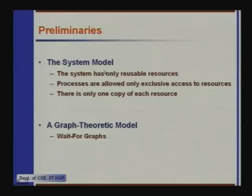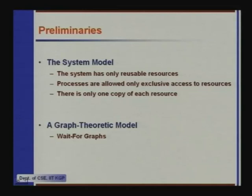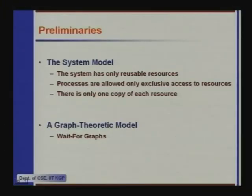Let us look at the system model. The system has only reusable resources — a resource is used by somebody and then it can be reused by another process. Processes are allowed only exclusive access to resources, used one at a time, and there is only one copy of each resource. We are going to look at the graph-theoretic model called a wait-for graph. In the wait-for graph, the vertices are the processes, and there is a directed edge from process Pi to Pj if Pi is waiting for some resource which is currently locked by Pj.